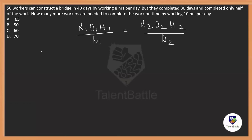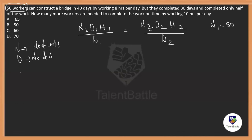Here N is the number of workers or people — this is the first case and this is the second case. D is the number of days they are going to take, and H is the number of hours per day they are going to consume, and W is the work done by them.